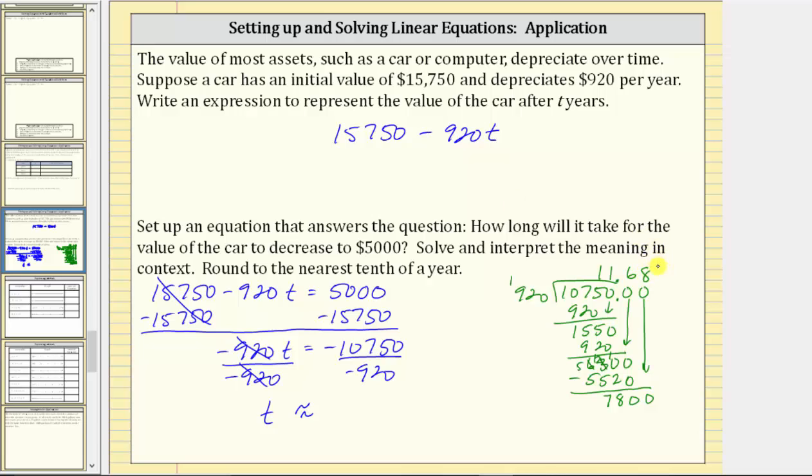Now we multiply. Eight times zero is zero. Eight times two is 16. Record the six. Perform an exchange. Eight times nine is 72, plus one is 73. Subtract. Zero minus zero is zero. Perform an exchange here. Ten minus six is four. Seven minus three is four. Seven minus seven is zero. Again, 140 is less than 920. The eight is correct. And now we can round the quotient to the tenths place value. The six is in the tenths place value. And the eight indicates you round up to 11.7.